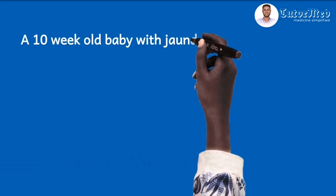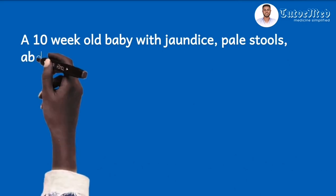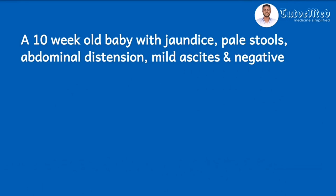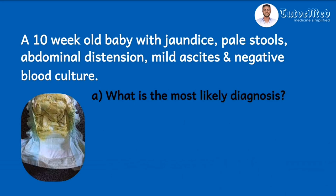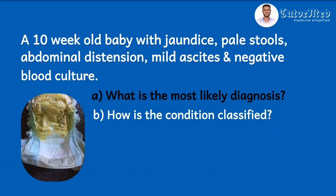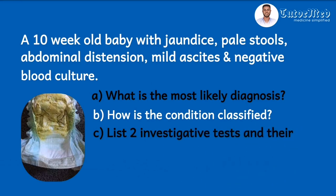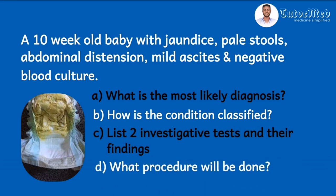Let's see our OSCE question. We have a 10-week-old baby with jaundice, pale stools, abdominal distension, mild ascites, and a negative blood culture. We are then shown a picture of a diaper containing some stools. The questions are: one, what is the most likely diagnosis? Two, how is the condition classified? Three, list two investigative tests and their findings. Four, what procedure will be done? And five, list two complications of the condition.